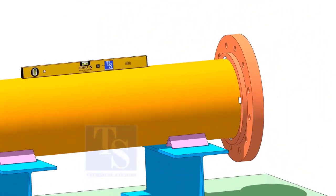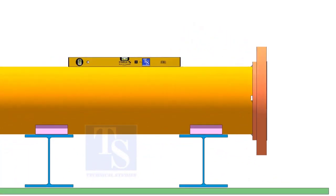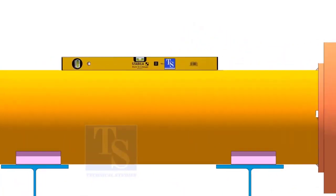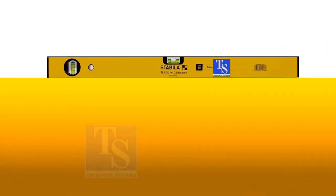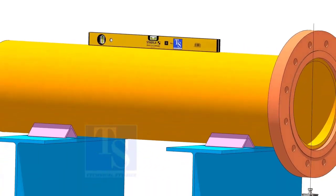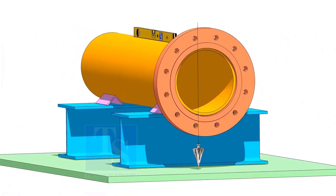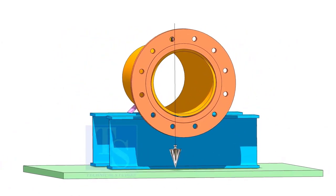After tacking the flange, correct the level of the pipe. Correct the plumbness of the flange and put proper packing on both sides of the pipe.